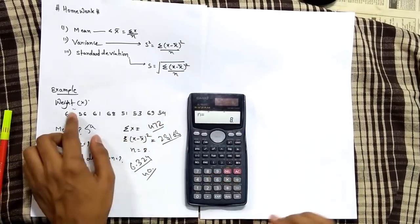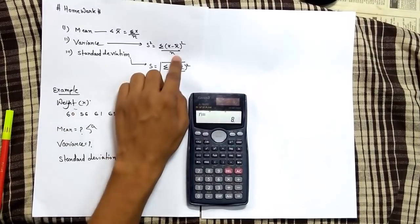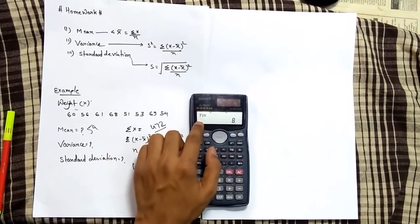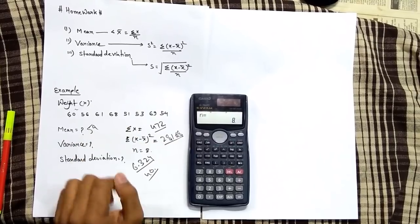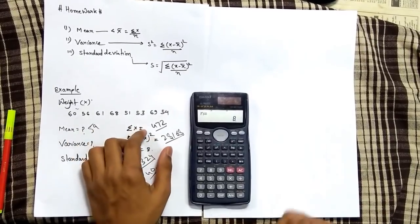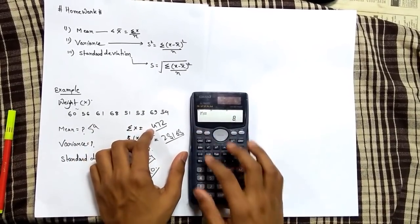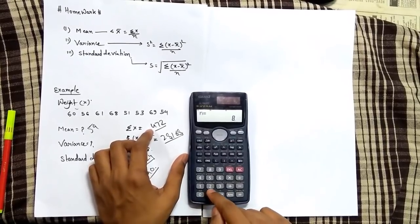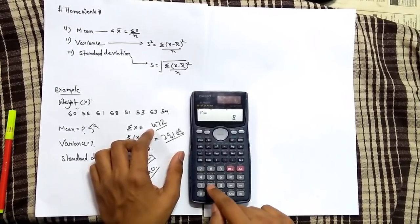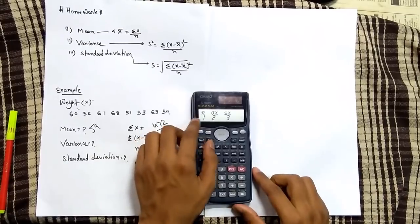So there are 8 numbers, so n value is 8. It is showing n value is 8. Now first of all let's calculate mean. Press shift and then press this 2 here.